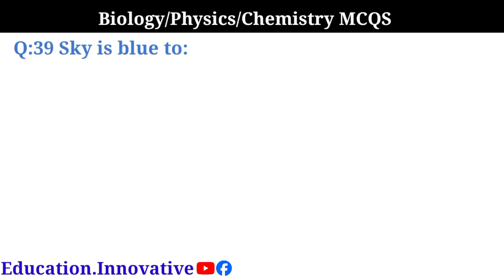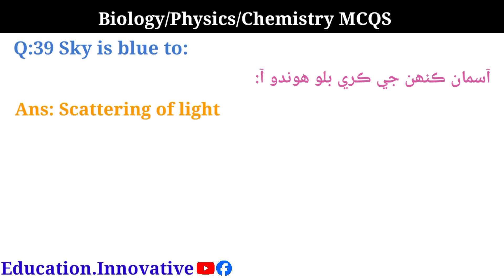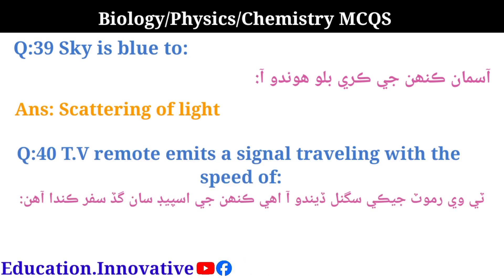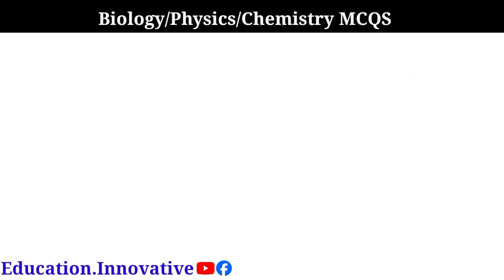Next question: Why is the sky blue? The correct answer is scattering of light. Next question: A TV remote emits a signal traveling with what speed? The correct answer is electromagnetic waves.